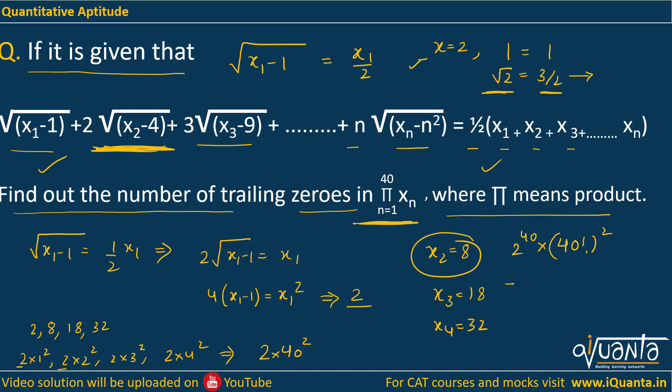In this you have to find out the power of 5 because obviously power of 2 is very much larger than power of 5. So power of 5 in 40 factorial is ⌊40/5⌋ + ⌊40/25⌋. This is the integer part. So this is 8 + 1, that means 9.